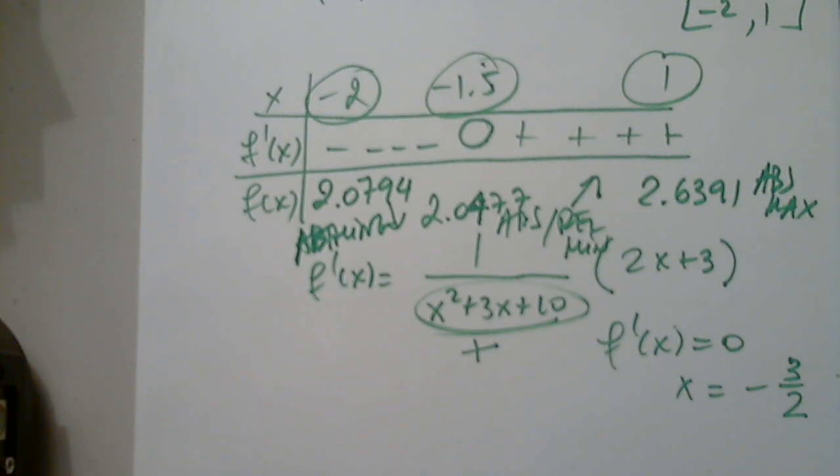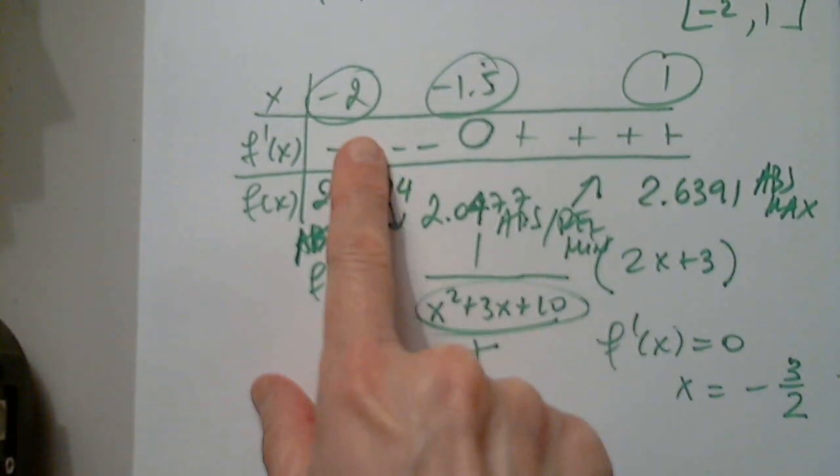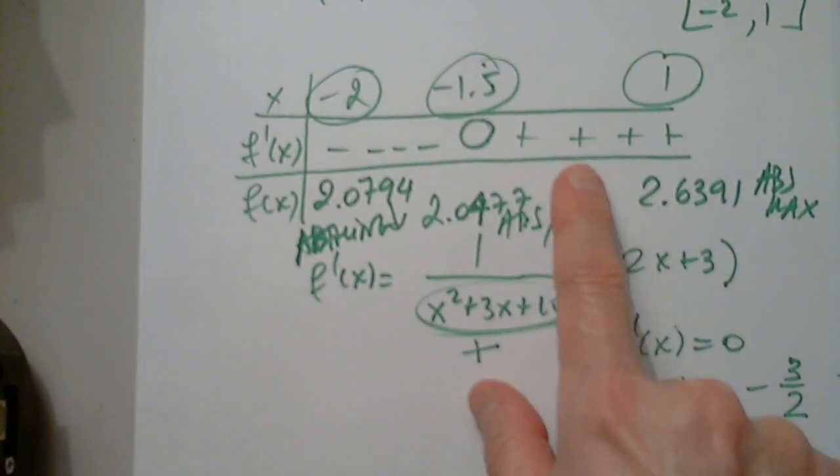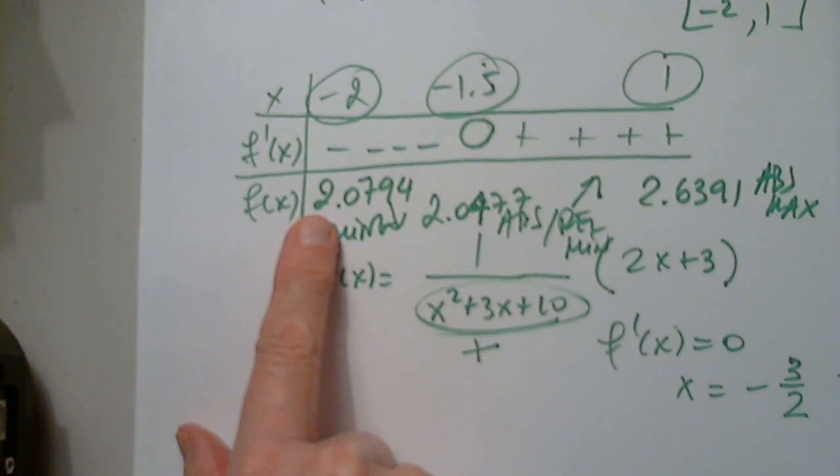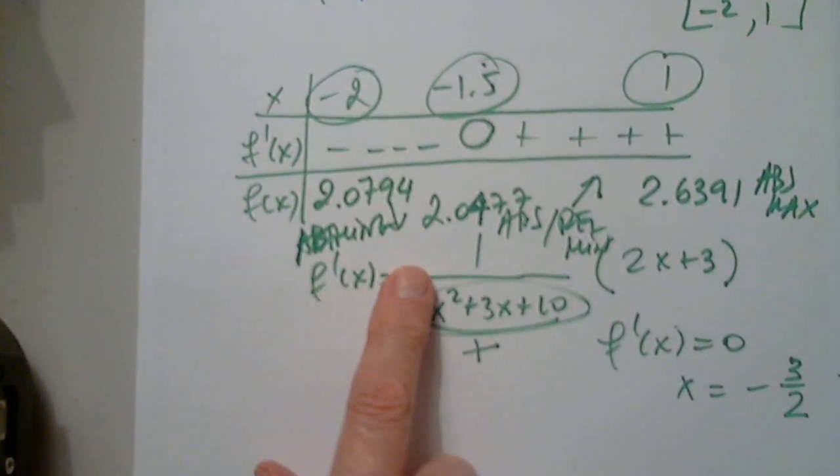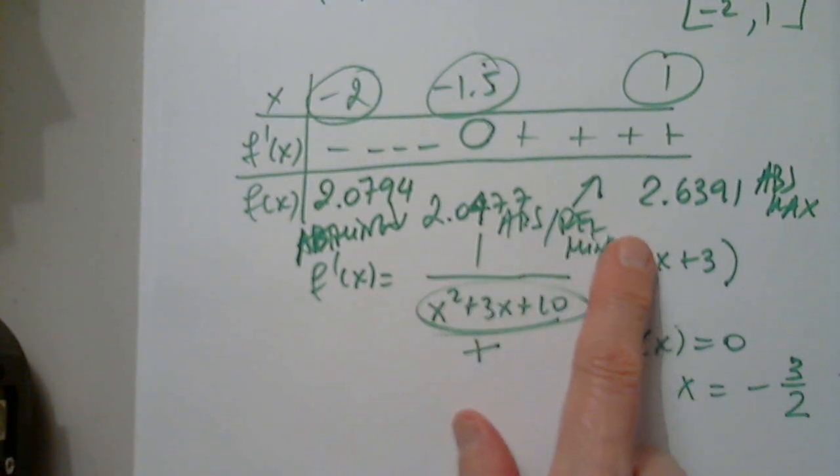Can you go back? How did you know it was decreasing and then increasing? Because when I plug in in the derivative, negative 2, I got negative. And when I plug in the derivative 1, I got positive. And from 2.07 to 2.04 is decreasing indeed. And from 2.04 to 2.63 is indeed increasing. Thank you. You're over. Thanks.